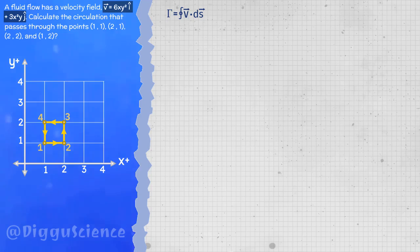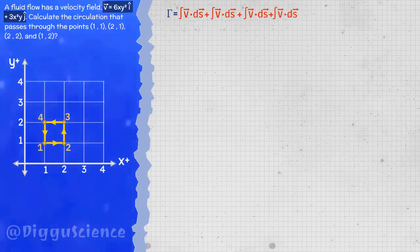Just write gamma equals the closed path integral of the vector v dot vector ds. Since the path is in the form of a box, there are four lines. The closed path integral can be written into four integrals.